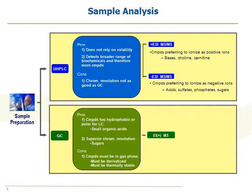We used to have a process where we would run a single injection but then switch the polarity of the mass spectrometer, which is another very standard approach. What we've found since dividing it into two separate injections is that we can actually get better coverage than by having one injection and switching the polarity. The theory behind that is simply that the solvent conditions so heavily dictate whether an ion can form or not that even when you're monitoring negative ions, your solvent conditions might prevent that negative ion from forming. Now that we've switched to two separate injections, we've actually been able to detect a wider range of molecules.